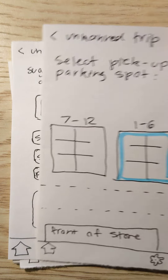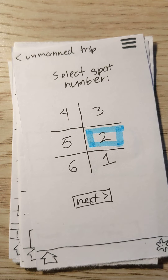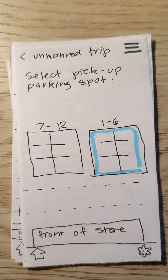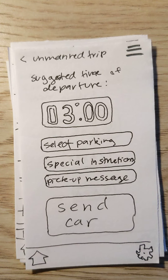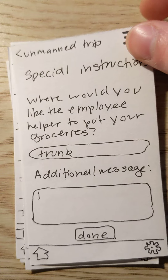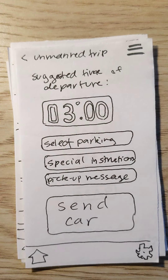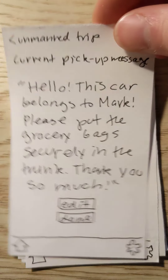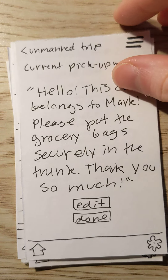If you hit select parking, it takes you to a zoned screen where you select the zone your number is in, then the specific spot number — since stores usually have specific parking spot numbers for pickup orders. For special instructions, you can tell the employee where you want your groceries placed and add any additional messages. The pickup message is the default one that the car will relay to the employee regardless of whether you add a special instruction.